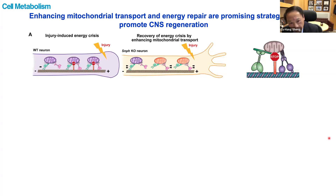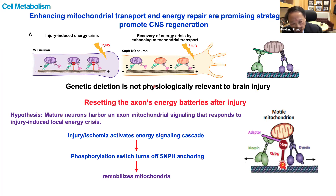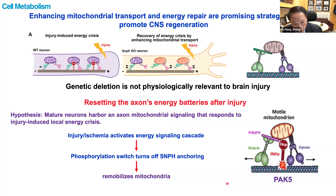These studies demonstrate that enhancing mitochondrial transport by deleting the Syntaphilin gene can reverse injury-induced energy crisis and stimulate axon regeneration after spinal cord injury. However, genetic deletion is not physiologically relevant to brain injury. We therefore proposed a new study by resetting the axon energy battery — our hypothesis being that mature neurons have an axonal mitochondrial signaling cascade that can respond to injury-induced energy crisis and turn off the Syntaphilin anchoring switch to remobilize mitochondria for replacement.